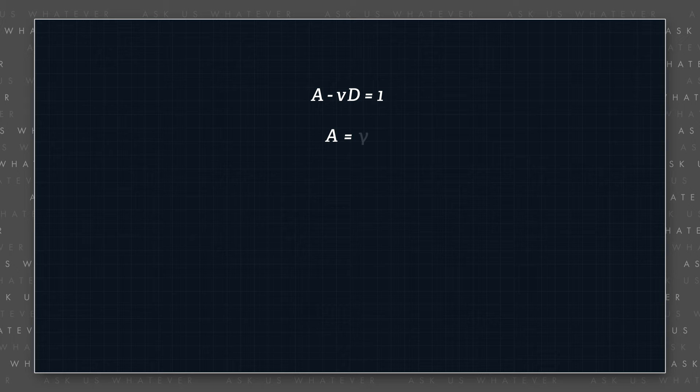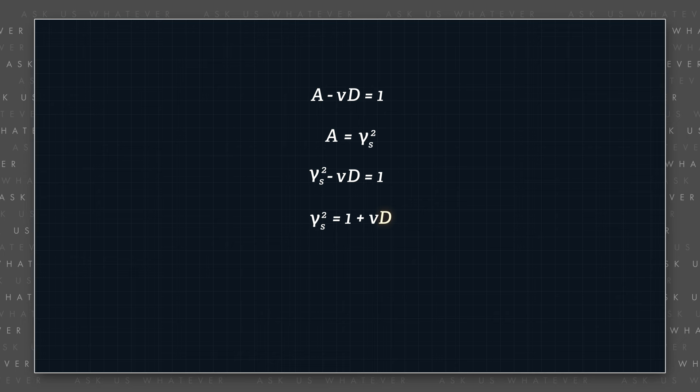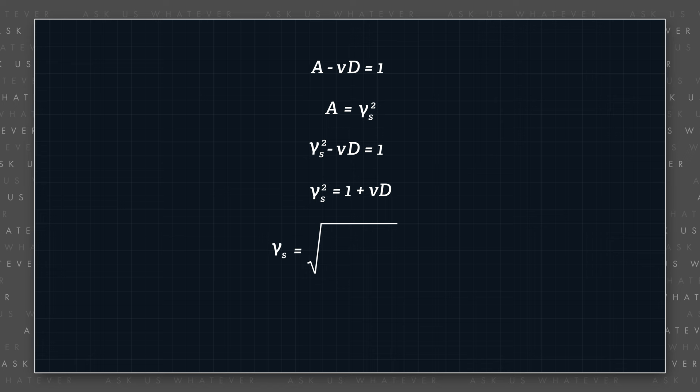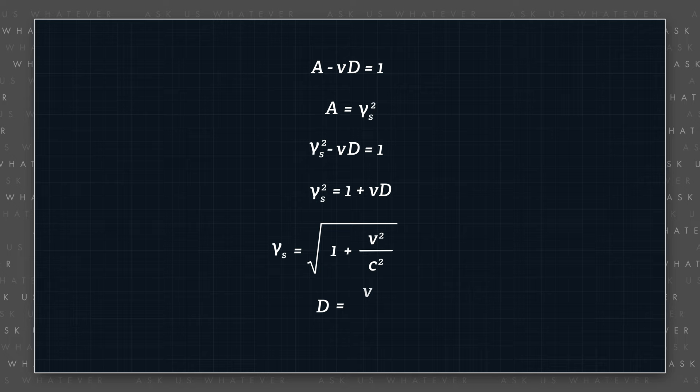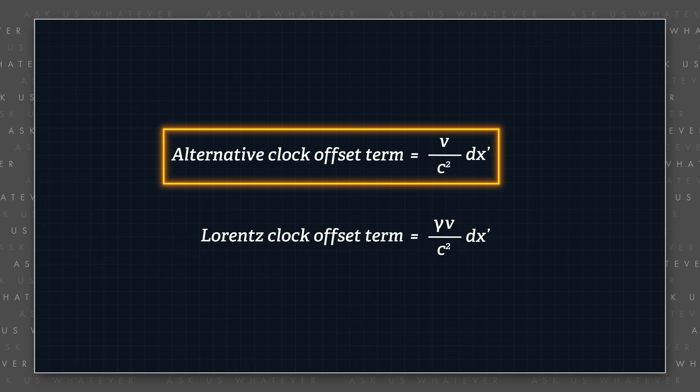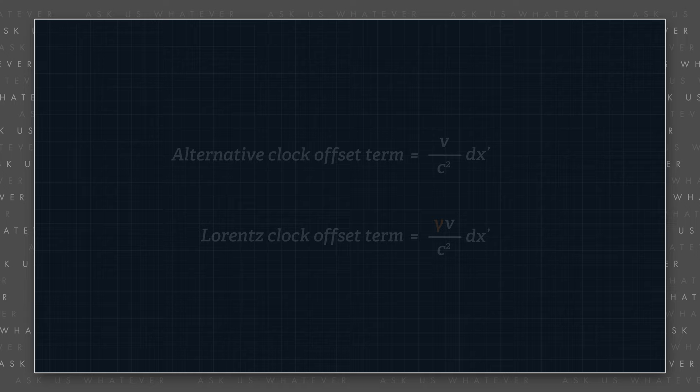Recall from the dx prime reverse transformation that capital A minus v times capital D equals one. And since capital A is equal to gamma s squared, then gamma s squared equals one plus v times capital D. Recall from episode 6.1 that gamma s is equal to the square root of one plus v squared over c squared, which means that capital D equals v divided by c squared. This means that the alternative model clock offset term differs from the Lorentz clock offset term by a factor of gamma.